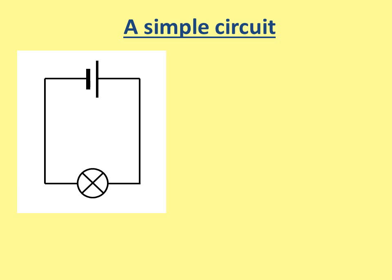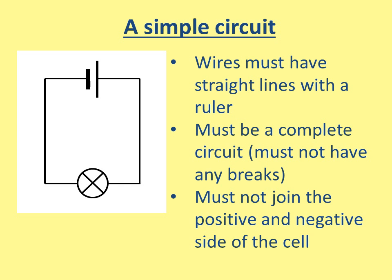Here's a simple circuit — you've got a cell at the top, wires, and a bulb at the bottom. A couple of rules: the wires must be straight, the wires must make a complete circuit with no breaks, and it must not join the positive and negative at the top of the cell.